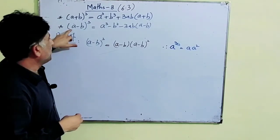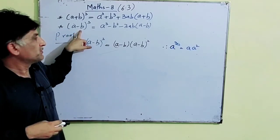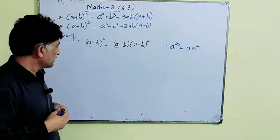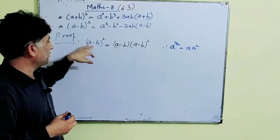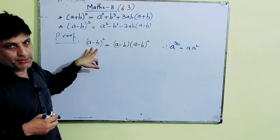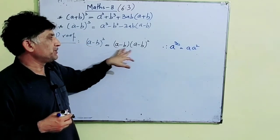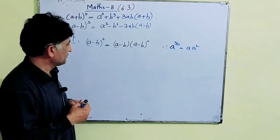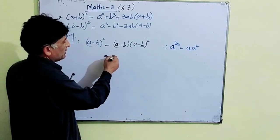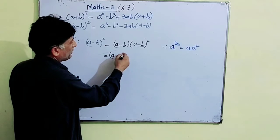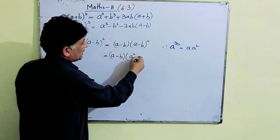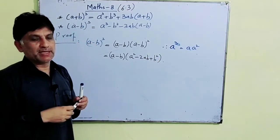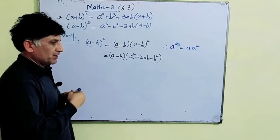Now students, we have to prove (a - b)³ = a³ - b³ - 3ab(a - b). So taking the left-hand side, (a - b)³ = (a - b)(a - b)², just like a³ = a × a². Next step: (a - b)(a² - 2ab + b²), because (a - b)² = a² - 2ab + b².